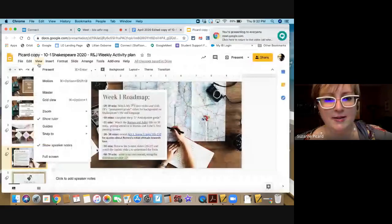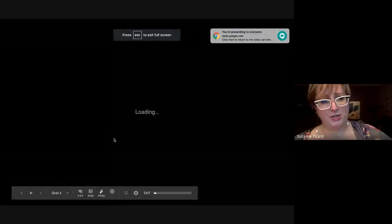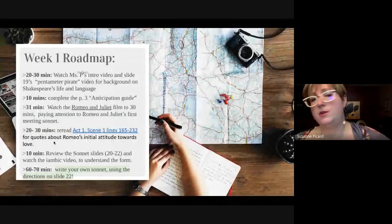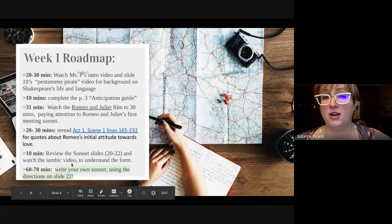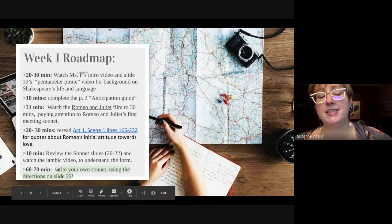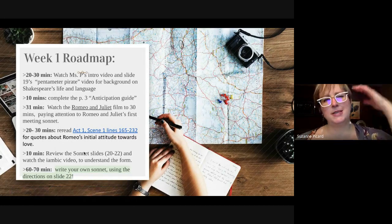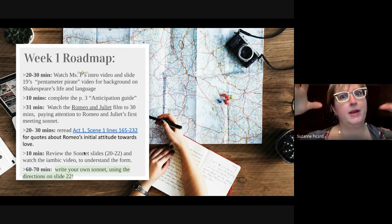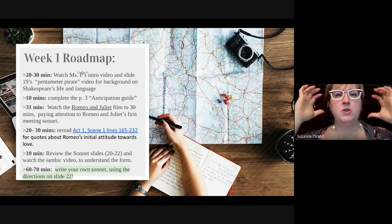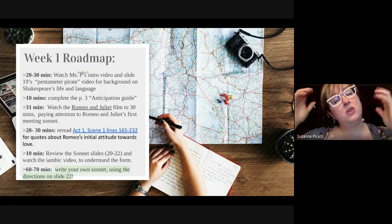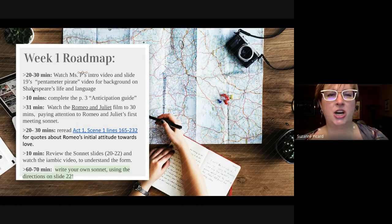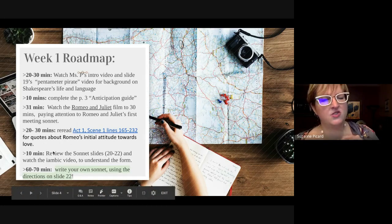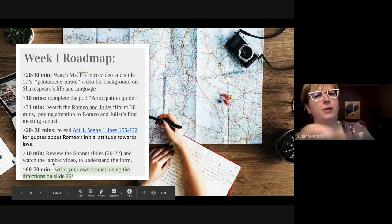After that, we're going to take a look at sonnets in particular. I encourage you, after you've watched the play and done the quote work, to review slides 20 to 22 and a little video that walks you through iambic pentameter. Once you've done those two things, you're ready to spend about an hour writing your own sonnet. You can spread all of this out across the week — there's roughly one chunk of prep work, one chunk of viewing, one chunk of quote hunting, and one chunk of writing — about three to four chunks to spread throughout the week.